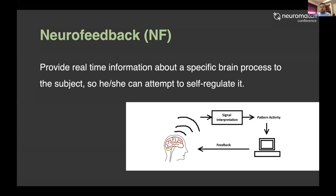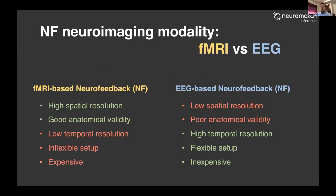What is neurofeedback? We take the signal measurement from a specific brain process of a subject, and we feed that information back to the participants, so they can try to self-regulate their own brain activity. This process can usually be done with a neuroimaging method, and here we compare two neuroimaging modalities: fMRI and EEG.